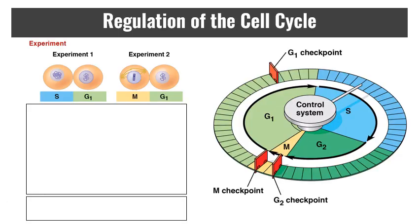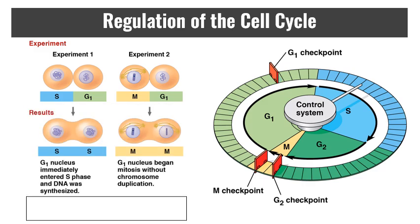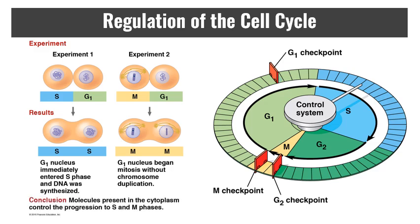The regulation of the cell cycle was figured out by merging cells that were in different stages and observing what happened. When an S-phase cell and a G1 cell are merged, both enter S phase; when an M-phase and a G1 cell are merged, both enter M phase. This revealed that molecules in the cytoplasm control progression through different phases. Eventually, three checkpoints were identified: one in G1, one at the end of G2, and one in the middle of mitosis.